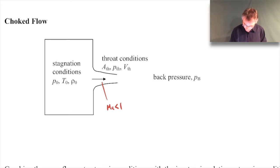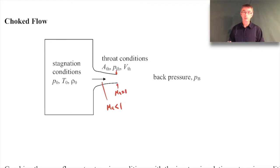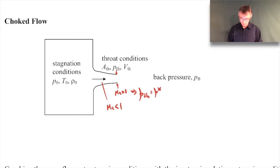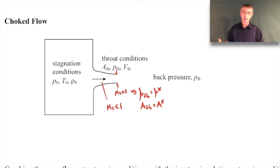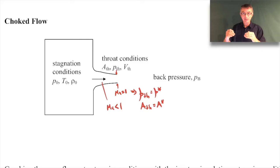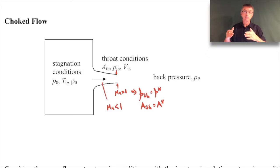We've dropped the back pressure such that right at the throat we have Mach number equal to one. At that point the conditions are sonic: the pressure at the throat will be P-star, the area of the throat will be A-star, the density will be rho-star. When I just reach that Mach number one, the back pressure will be equal to P-star — I've dropped the back pressure to that critical value, and right at the throat the throat pressure is P-star. That's a critical point.